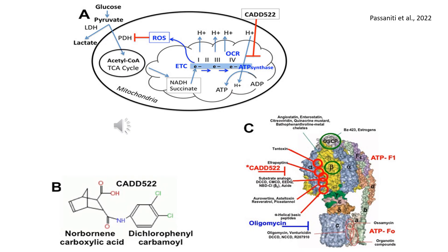In Panel A, the mitochondrion is the powerhouse of the cell, where oxidative phosphorylation (OxPhos) generates ATP via ATP synthase, utilizing the electron transport chain.